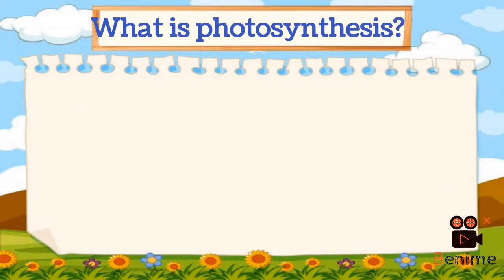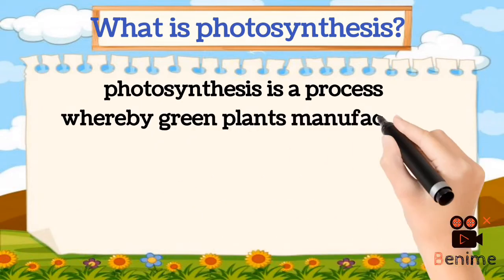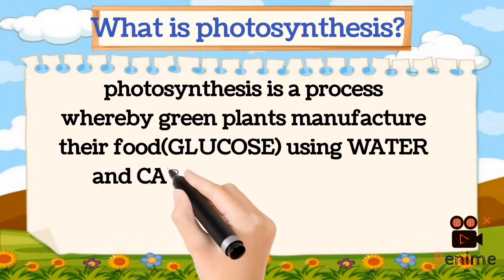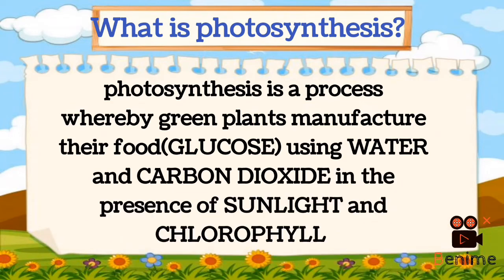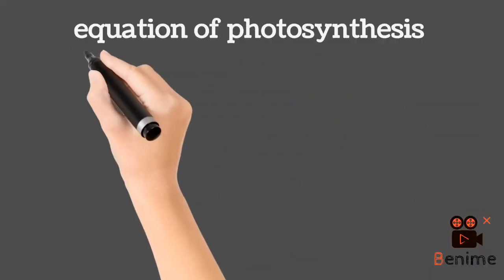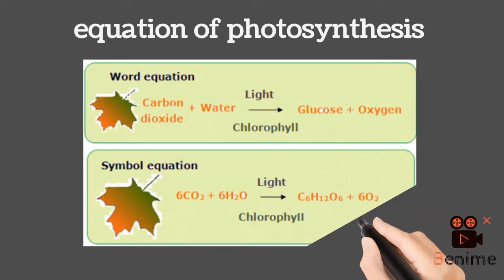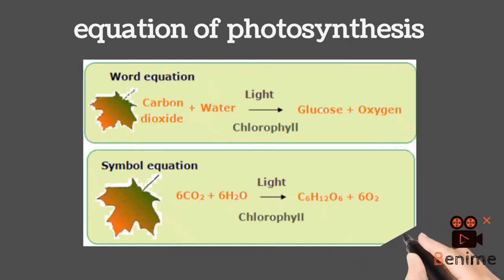How do we define photosynthesis? Photosynthesis is a process green plants use to manufacture their food in the presence of sunlight and chlorophyll. In the equation, carbon dioxide reacts with water in the presence of light and chlorophyll to produce glucose and oxygen.